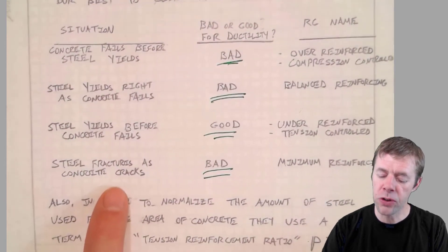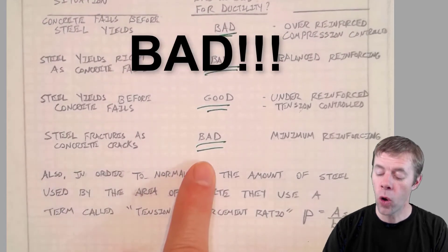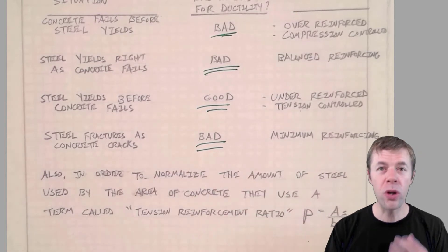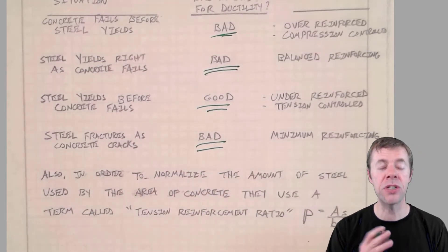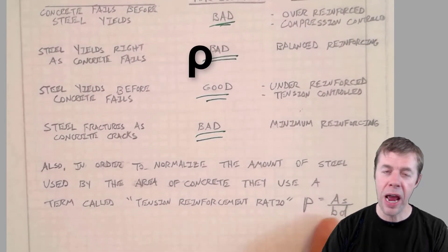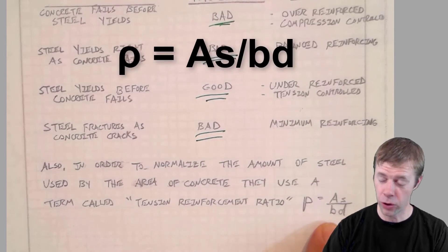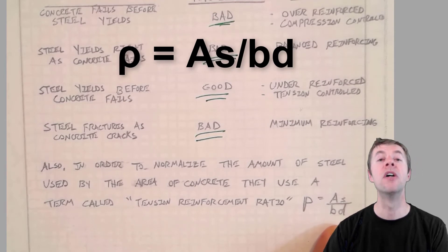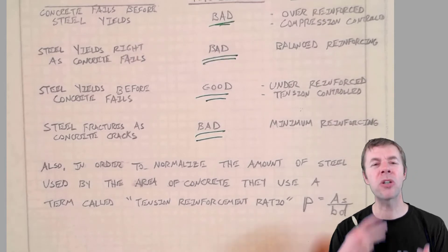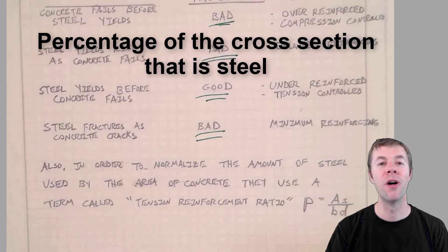There's also a situation where the steel is going to fracture right as the concrete cracks. That's also bad. That's called minimum amount of reinforcement. And we'll talk about that coming up in a video. Also in order to normalize the amount of steel in your cross-section they have something called the tension reinforcement ratio or rho. This is AS the area of steel divided by BD. B is the width of your girder and D is the distance from the compression fiber to the centroid of your tension steel. This kind of gives you the percentage of the cross-section that's made out of steel and it's very helpful coming up.